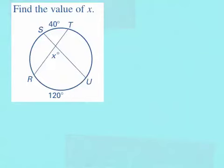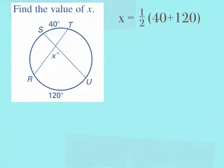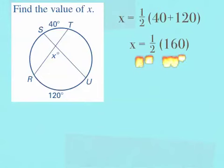An example of this theorem asks us to find the value of x. X is an angle on the interior of my circle created by two intersecting chords. The intercepted arc from angle x is 120 degrees, and the arc intercepted by x's vertical angle measures 40 degrees. To find x, I take one-half the sum of 120 and 40. 40 plus 120 is 160, and half of 160 gives me x equals 80 degrees.